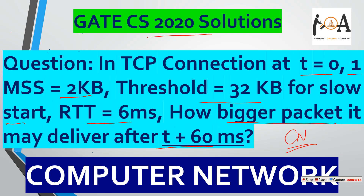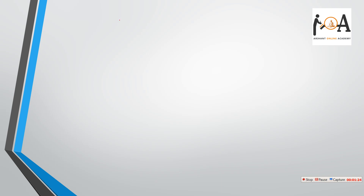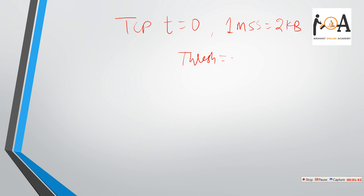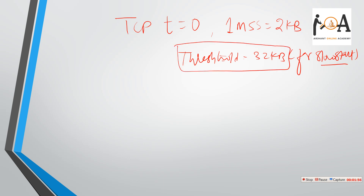Now let's start the solution without any delay. In the question, the TCP connection starts at T equals 0. We are given 1 MSS equals 2KB, threshold value equals 32KB for slow start, and RTT equals 6ms. We need to find how big a packet can be sent after T plus 60 milliseconds, which means after 60ms.